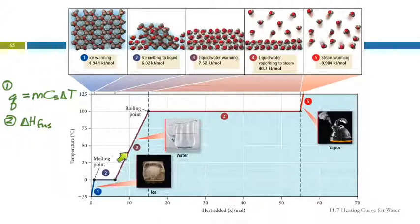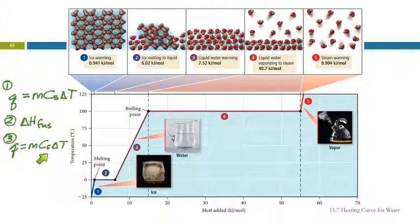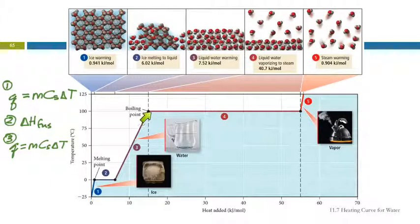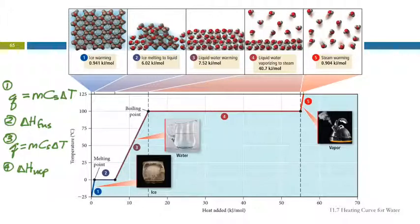When we get to line three, we have heating occurring again, and every time we have heating we use Q equals MC delta T. This C is a different C, though, because liquid water has a different heat capacity than solid water. We can calculate the energy needed to warm the water from zero up to 100 degrees where it begins to boil. Line four shows the water boiling — going from liquid to gas — and to calculate the energy there we need the heat of vaporization. The heat of vaporization is much higher, which is why that line segment is much longer, because it takes a lot more energy to boil water than to melt it.